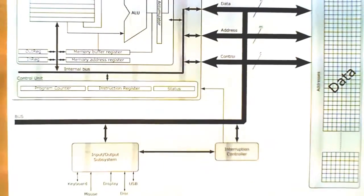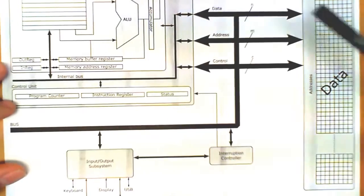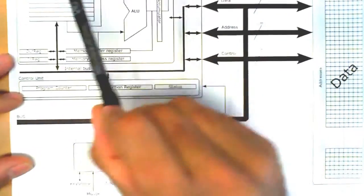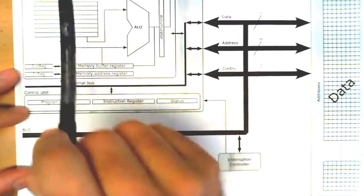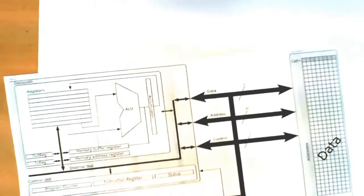In this video we are going to explain one of the parts of today's computer system. More precisely, this box over here, which is inside the CPU, which we call the data path. The data path, as its name suggests, is a place in the computer in which the data is being manipulated.